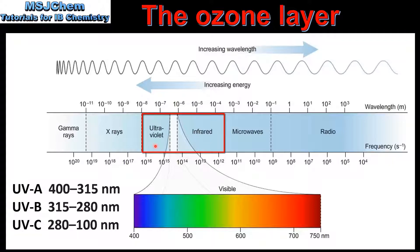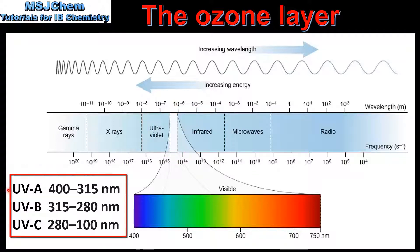The ozone layer is responsible for absorbing harmful UV radiation, so for the rest of the video we'll focus on this region. Ultraviolet radiation can be divided into UVA, UVB and UVC. UVA has the longest wavelength and UVC has the shortest wavelength. In terms of energy, UVA is the lowest energy UV radiation.